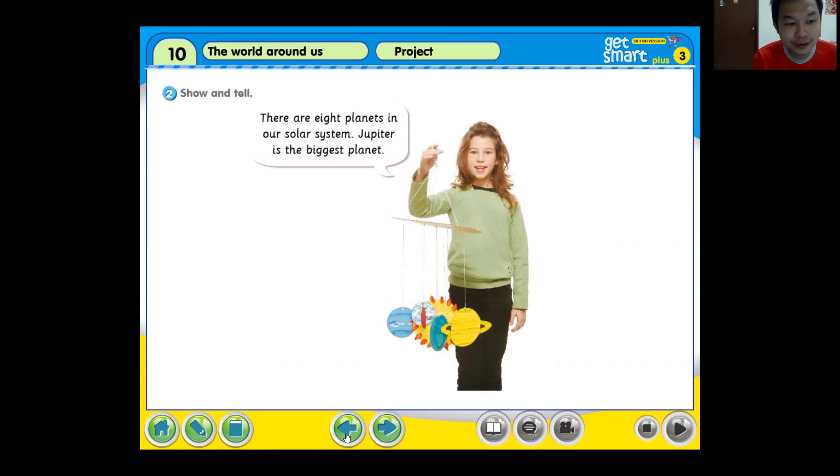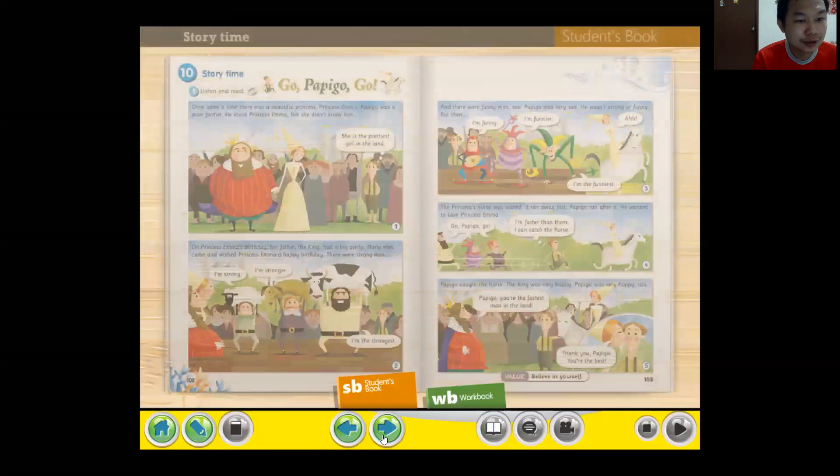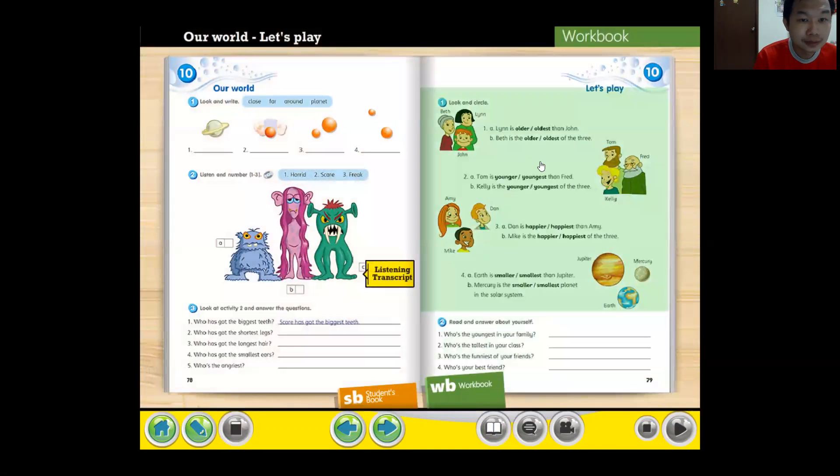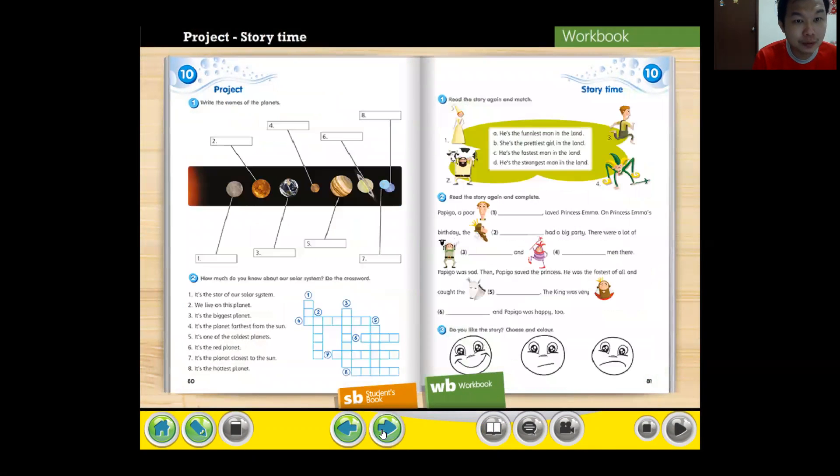So you can compare actually. The smallest is Mercury. The biggest is Jupiter. Of course if you want to put sun in your solar system, then the sun will be the biggest among all. So let's proceed with our workbook.